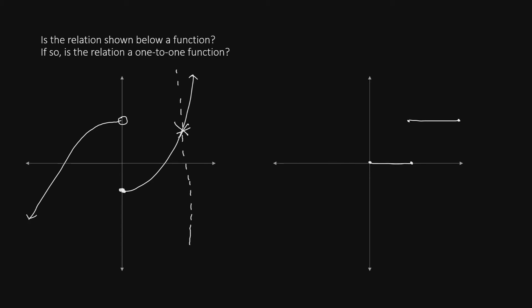The only point of doubt is in the middle, where you could draw a vertical line that crosses through both an open circle and a closed circle. Although it appears you would fail the vertical line test, the open circle doesn't count against you. The open circle represents a gap — the function doesn't actually exist at the open circle, but it does exist at the closed circle. Therefore, this vertical line only crosses through the function once at the closed circle, and the open circle doesn't count. Therefore, this picture passes the vertical line test and it is a function.